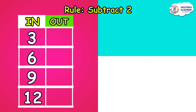Now let's take a look at the input and output table. A subtraction input and output table has a rule, and the rule here says subtract two. In the "in" column on the left, we have numbers like three, six, nine, and twelve. We are going to subtract two from each number.